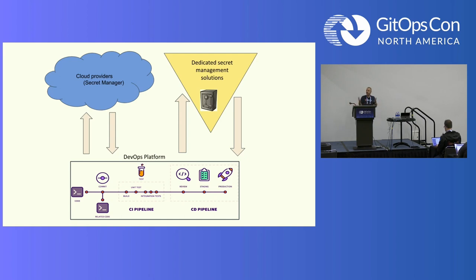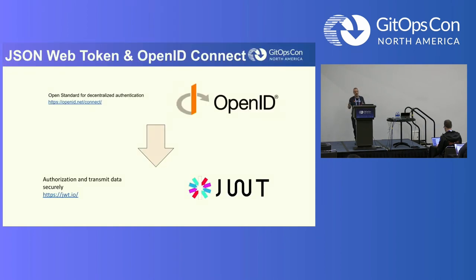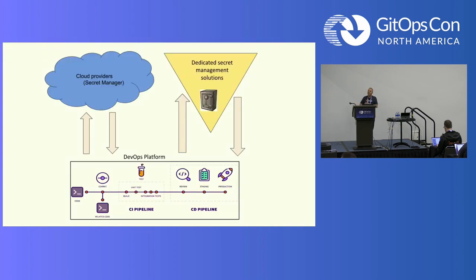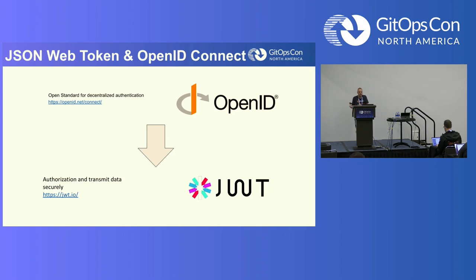Well, if there is a native integration and one of the vendors builds it for you, great — you can simply use it. But as a product manager at GitLab, as much as I would love to integrate with all the secret management solutions out there, I simply can't. There is something we can do until someone builds that integration for you. We need to familiarize ourselves with two concepts: OpenID Connect and JWT. OpenID Connect is an open standard for decentralized authentication. The JWT is a token — one of the ways to implement OpenID Connect — and it's a short-lived ID token. The good news is that all cloud providers, secret management solutions, and many DevOps platforms support OpenID Connect with JWT. I still haven't seen a tool that does not support it — it's practically a de facto standard today.